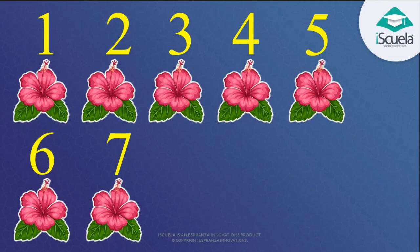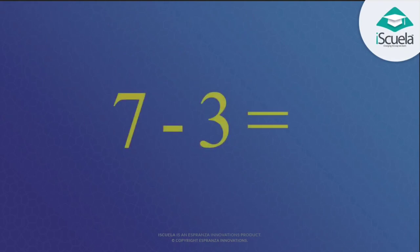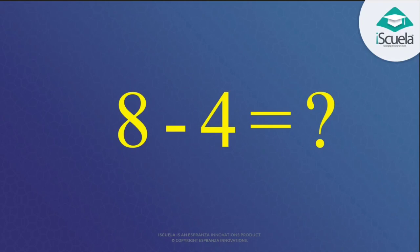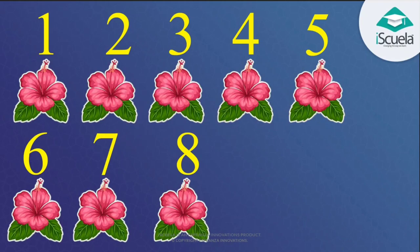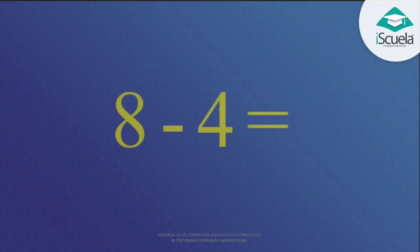Now look at this sum: 7 minus 3 is equal to what? 7 minus 3 is equal to 4. Now the last sum: 8 minus 4 is equal to what? 8 minus 4 — count: 1, 2, 3, 4. So 8 minus 4 is equal to 4. Very good!